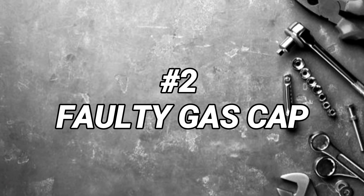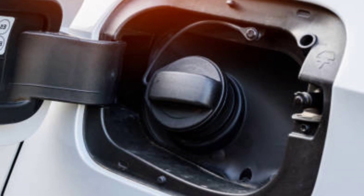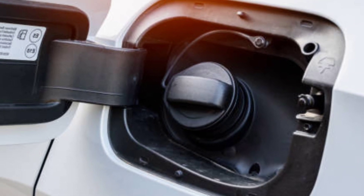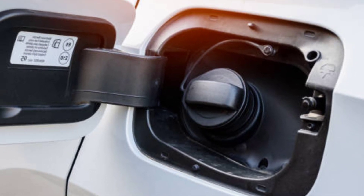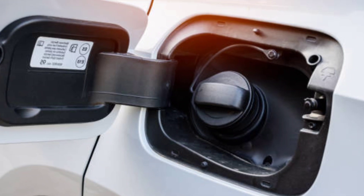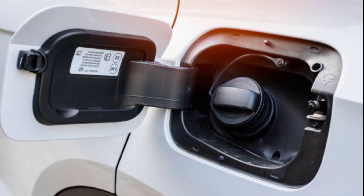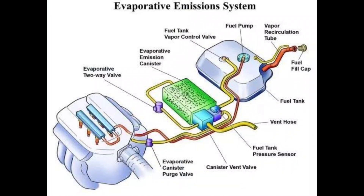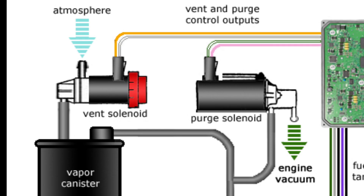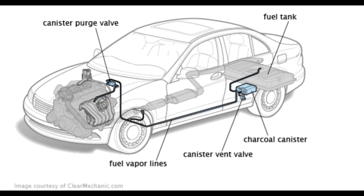Faulty gas cap. The gas cap seals the fuel tank and helps maintain proper fuel pressure. If it's loose, damaged, or missing, it can cause a vacuum leak in the evaporative emissions control system, which is designed to capture and store fuel vapors from the fuel tank and prevent them from escaping into the atmosphere. This leak can trigger the check engine light and set off an error code related to the evaporative emissions control system.